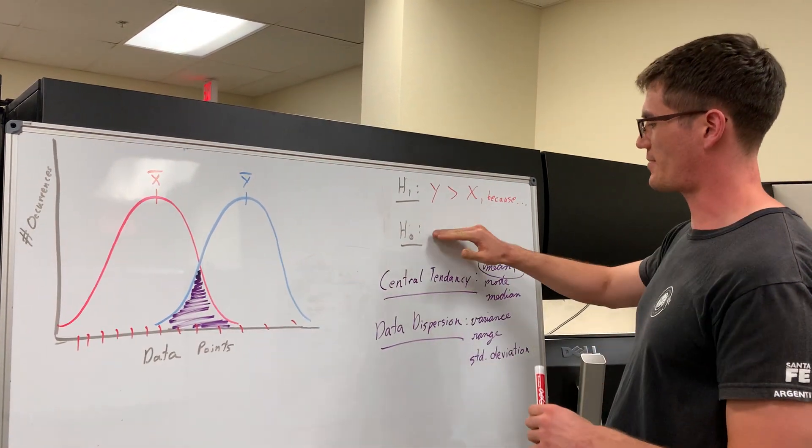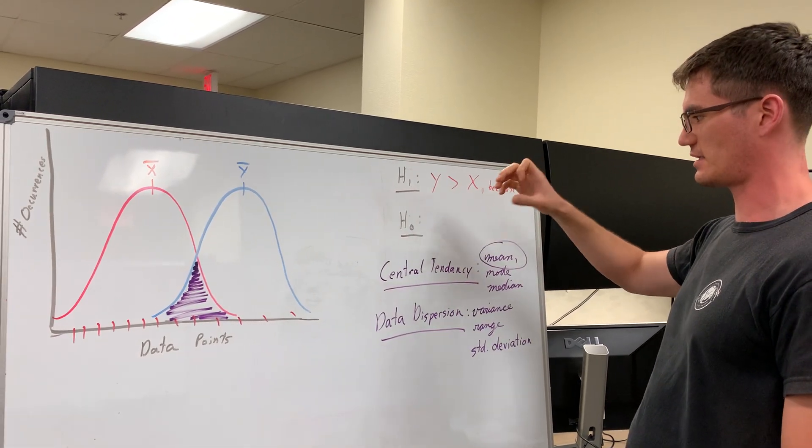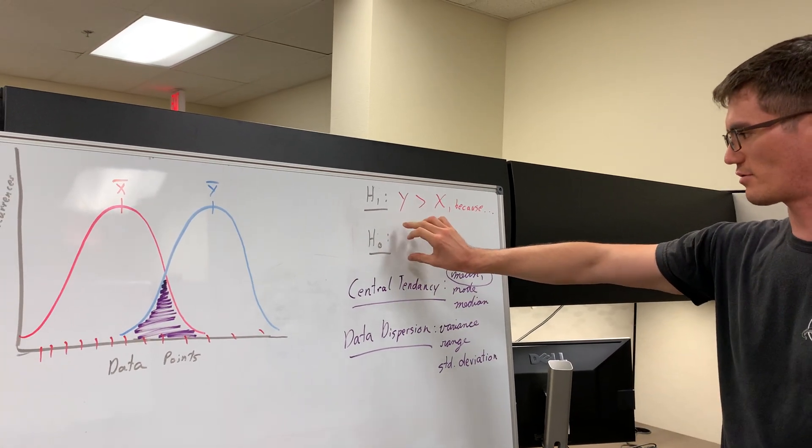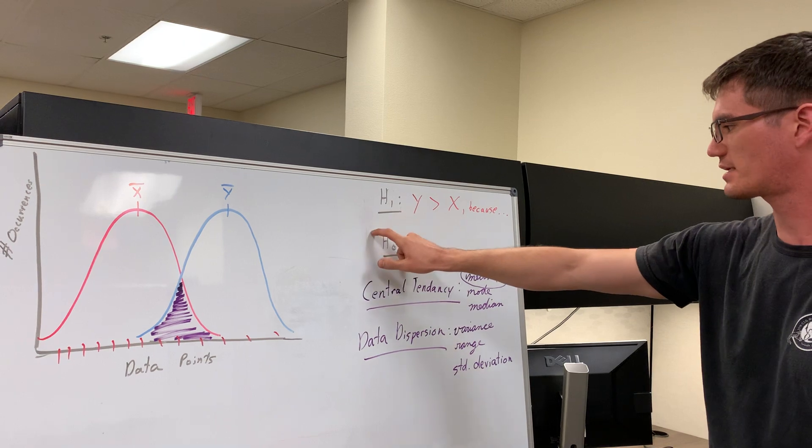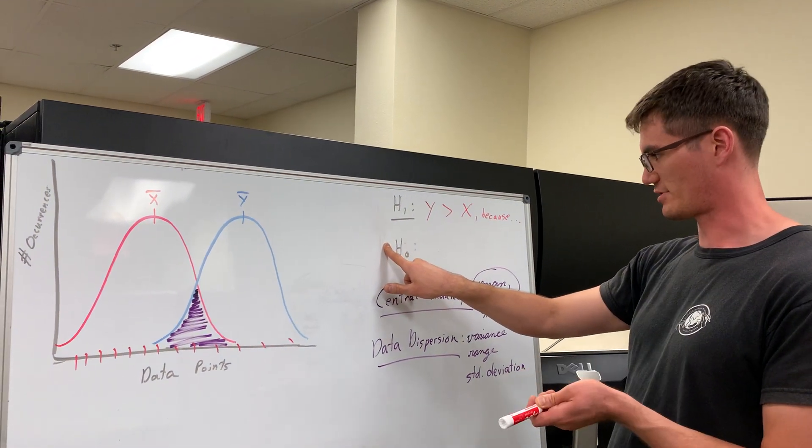Now, the null hypothesis is, like I said, it's the straw man, it's the sort of killjoy hypothesis that you're trying to reject. This is actually what your t-test, what your mathematical equations are actually measuring.